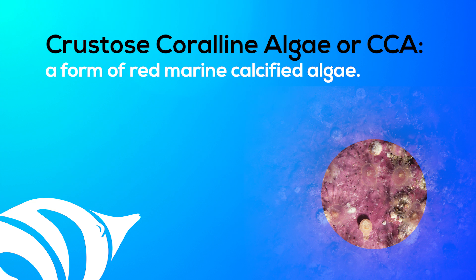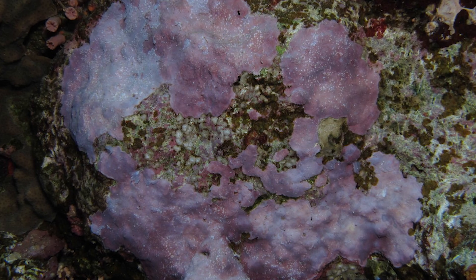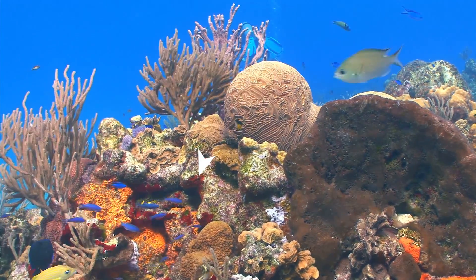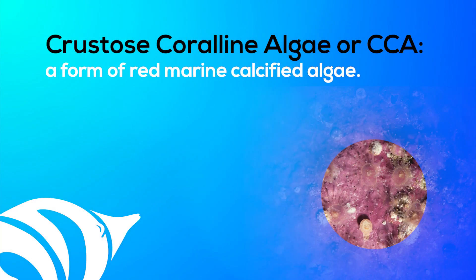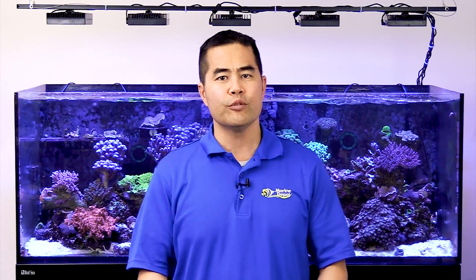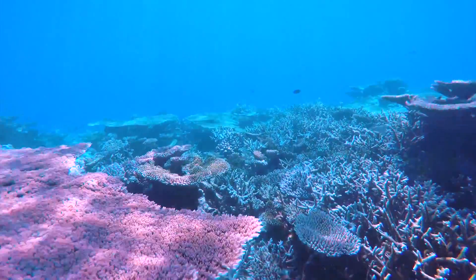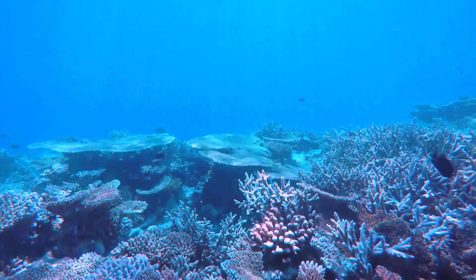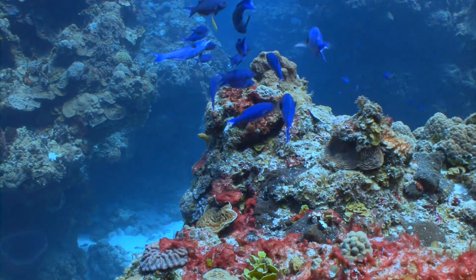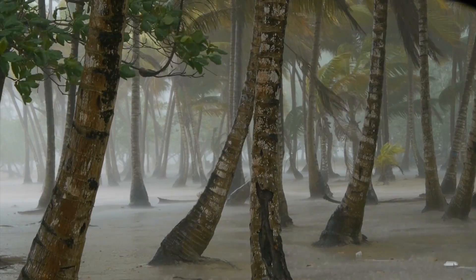Marine biologists refer to coralline algae as crustose coralline algae, or CCA for short. Although the algae appears purple and pink and sometimes red, coralline algae is simply a form of red marine calcified algae. It's quite different than most other types of algae found in reef tanks because the cells form a honeycomb structure of calcium carbonate, similar to the structure in stony corals but even stronger. As the algae grows, it lays down layer upon layer of this super strong limestone honeycomb, strengthening wild reefs and binding together rocks and coral skeletons, helping the reef withstand tide surges, pounding waves, and tropical monsoons.